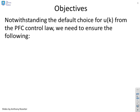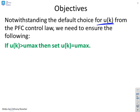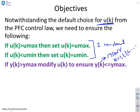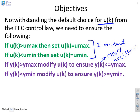Notwithstanding the default choice for U(k) from the PFC control law, we have constraints we want to satisfy: the input must not violate an upper constraint, the input must not violate a lower constraint, and the output must not violate an upper constraint. Although the input constraints are each a single constraint, the output constraint applies for K equals 1, 2, 3, 4, and so on — it must be checked at every future sample.